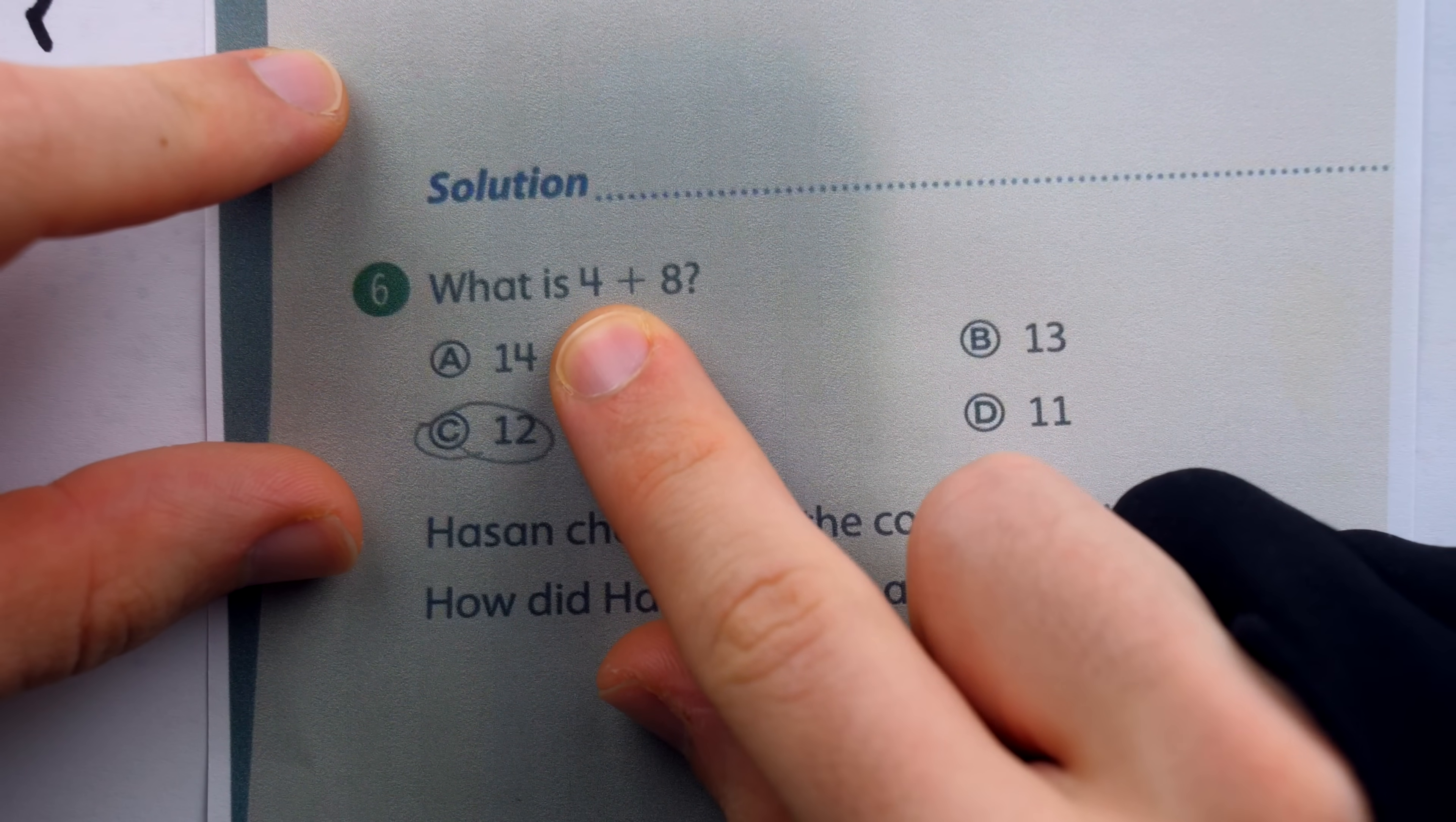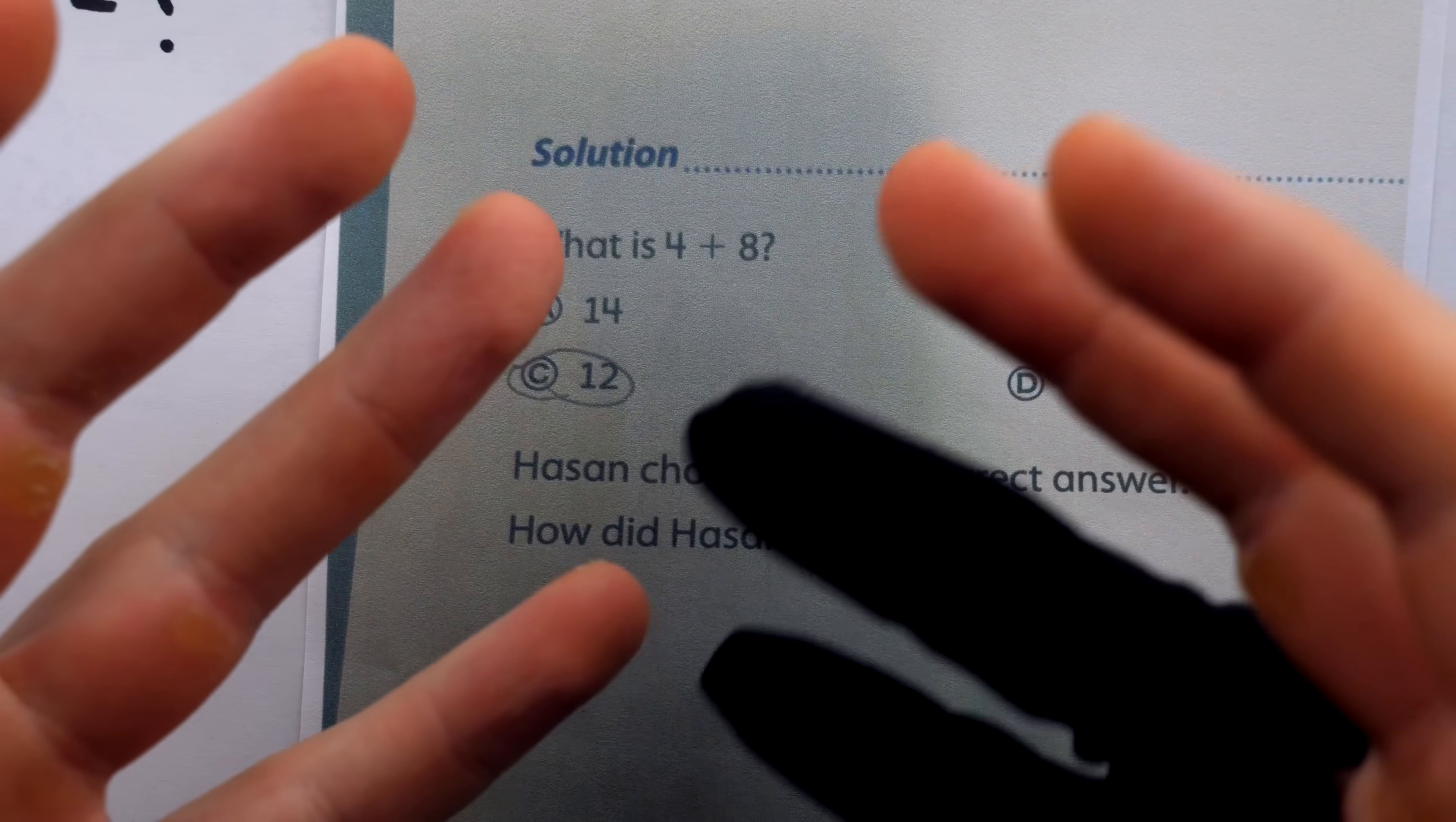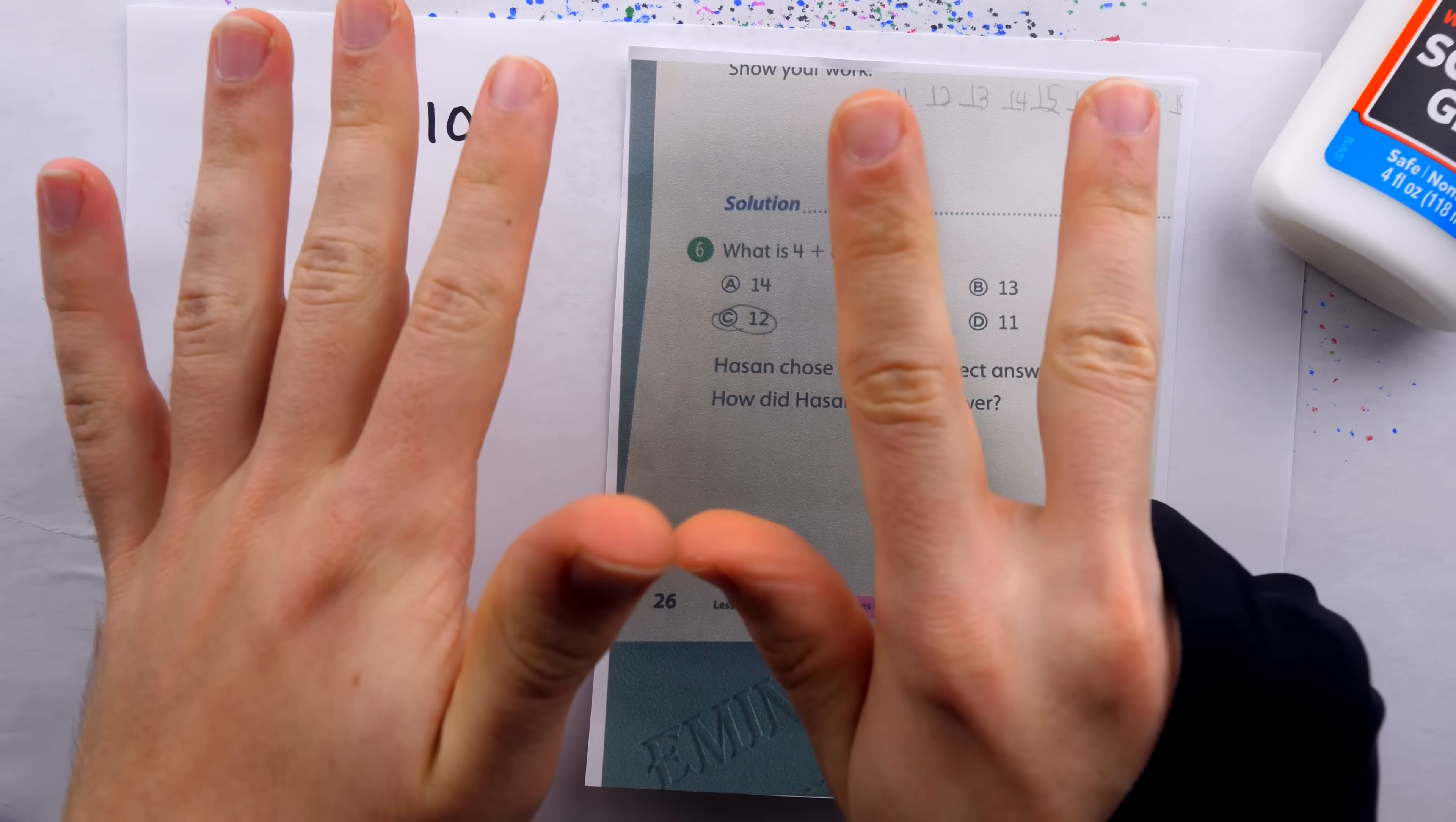Instead of putting 4 in his head and then counting 5 on his first finger, then 6, 7, 8, 9, 10, 11, 12, he probably put 4 on the first finger and counted up from there. If only someone could have caught him in the act, it probably would have looked something like this. 4, 5, 6, 7, 8, 9, 10, 11.